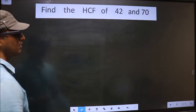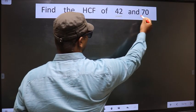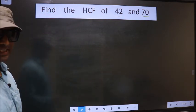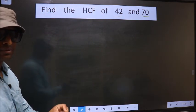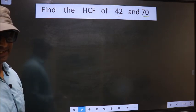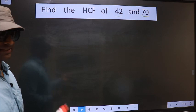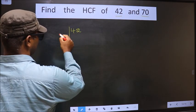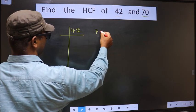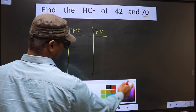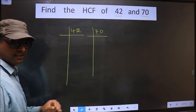Find the HCF of 42 and 70. To find the HCF, first we should do the prime factorization of each number separately. That is 42, 70. Okay. Next.